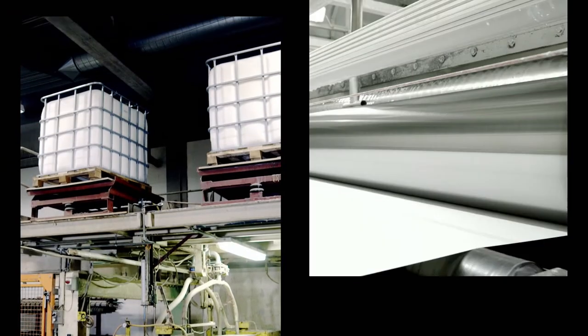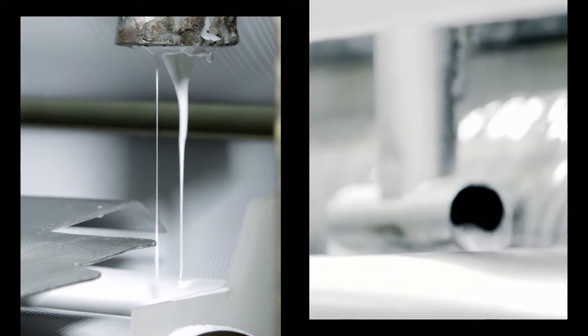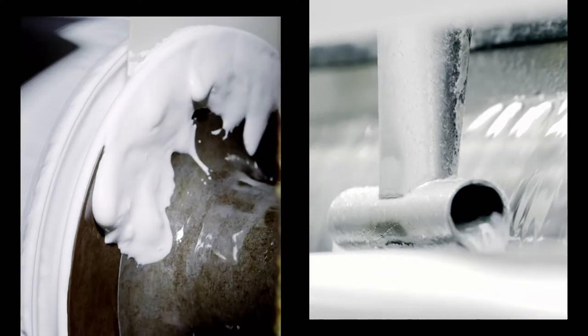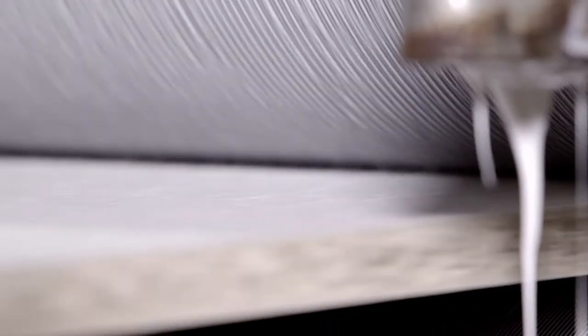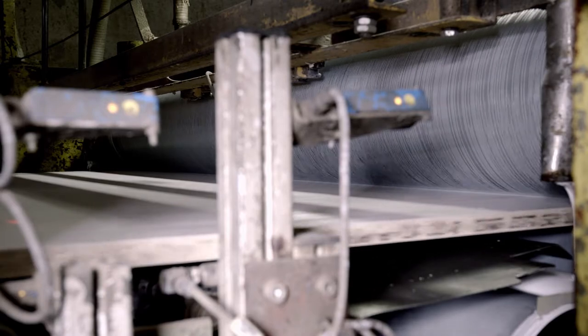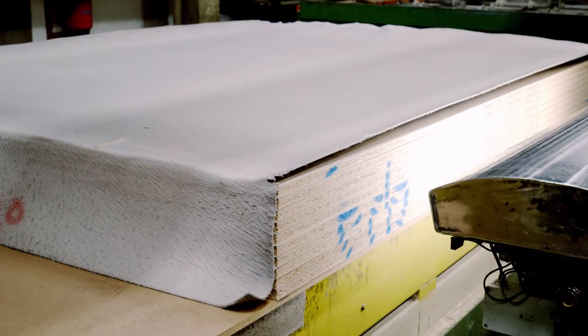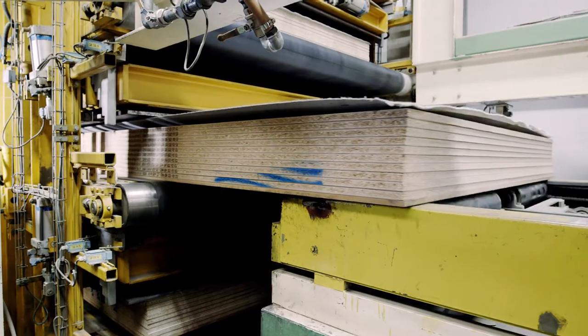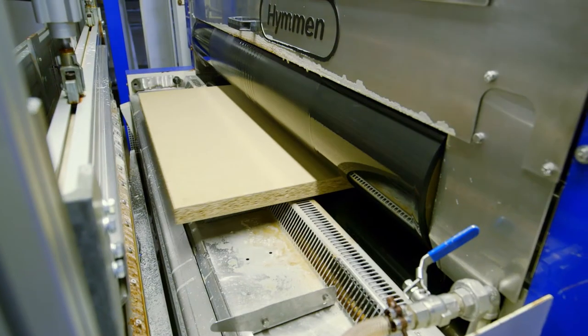We distinguish between two production processes depending on the type of glue used: white glue, urea resin or PUR. White glue is applied by means of rollers to the raw panel. Laminated with HPL the panels are fed into the flat press.